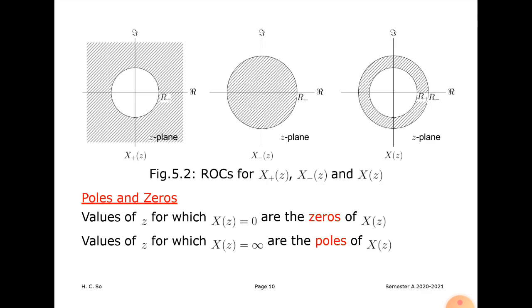This is the z-plane, with real and imaginary parts. r+ is the ROC — the region of convergence. If |z| > r+, the ROC converges to the exterior part of the unit circle. The first figure shows the exterior part of the unit circle — this corresponds to a causal signal.